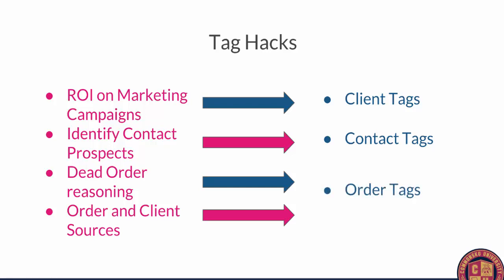The last tag hack is order tags — things like dead order reasoning or order and client sources. When you create a project, tag that order with where it came from: online, from the phone, in person. Or if you lose an order, tag that project with why you lost it — maybe you lost it to a competitor, maybe they didn't like your ideas. All of this filters through to our reporting section so you can see why you're losing presentations, whether it's to a competitor or because of pricing. It will make your reporting much, much stronger inside of the platform.